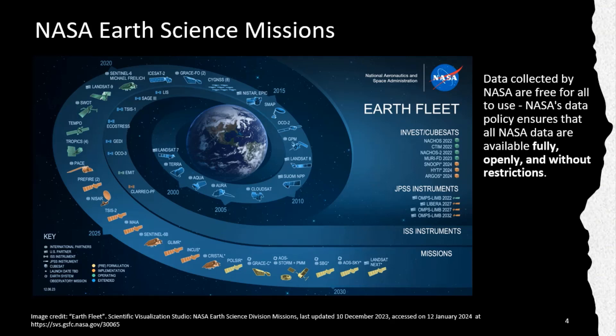NASA Earth Science missions: NASA works with various international partners and has a fleet of satellites orbiting the Earth with sensors taking measurements and images. NASA also has instruments aboard the International Space Station, aeroplanes, balloons, ships, and on land — this comprises the Earth Observing System. These global observations enhance our understanding of planet Earth by helping us understand the interconnected processes and systems of this planet and identify changes that are both natural and human-caused. All data collected by NASA are free for all to use; NASA's data policy ensures that all NASA data are fully available, openly and without restrictions.